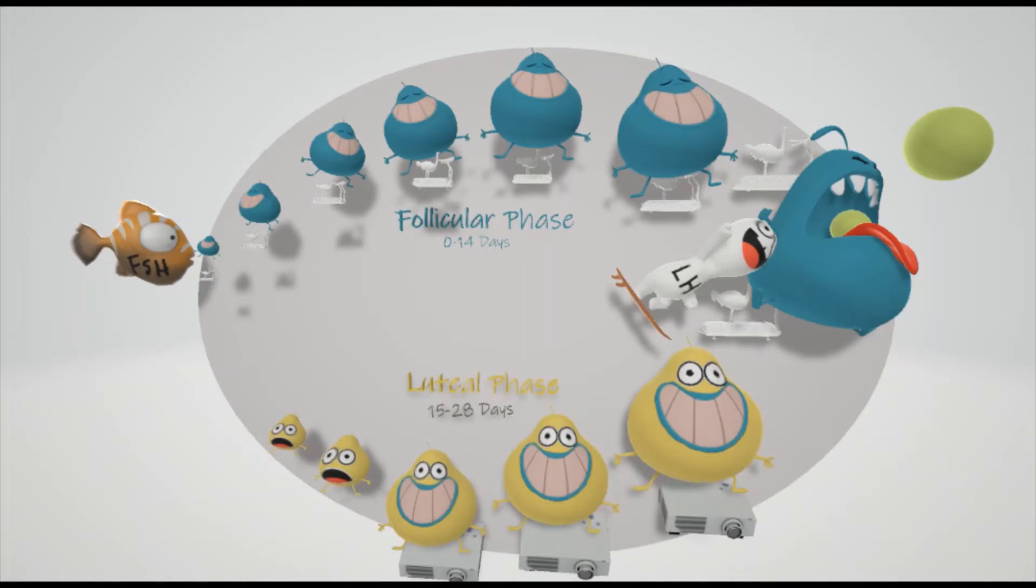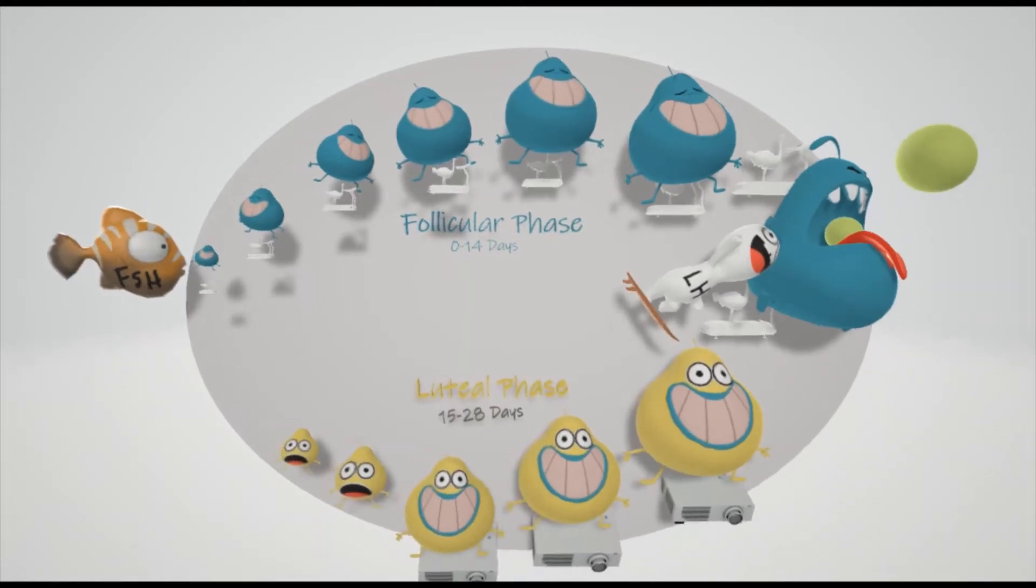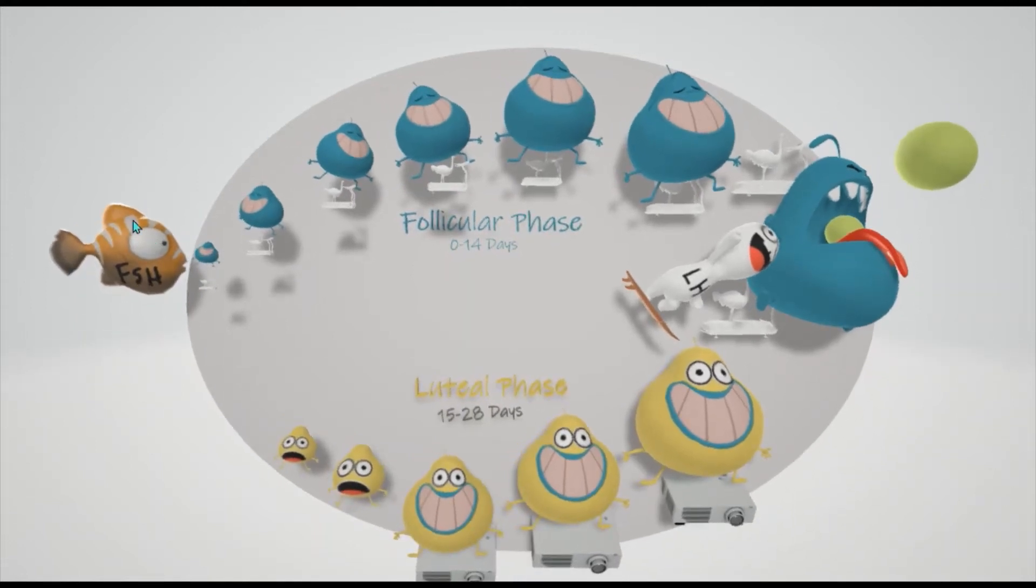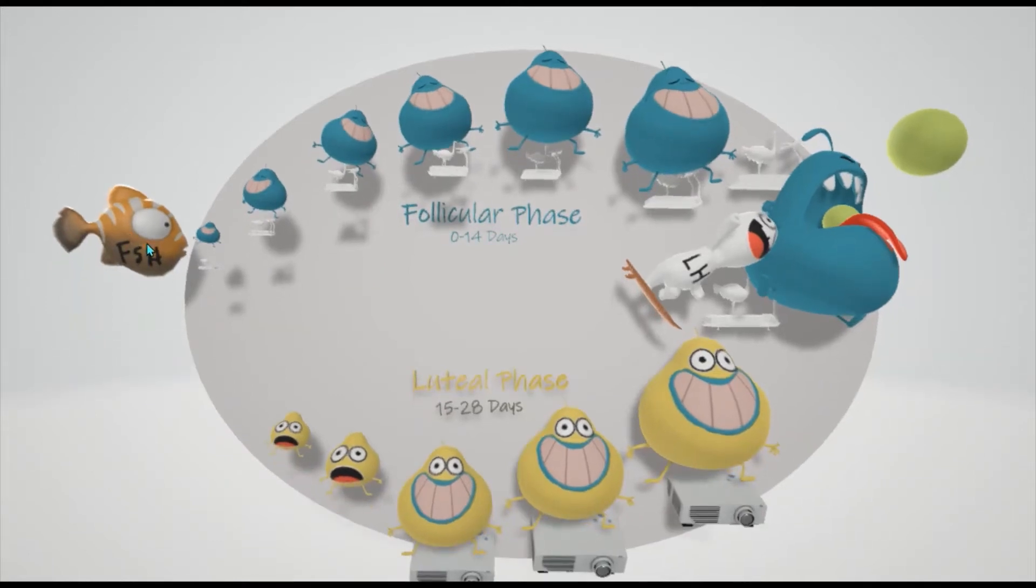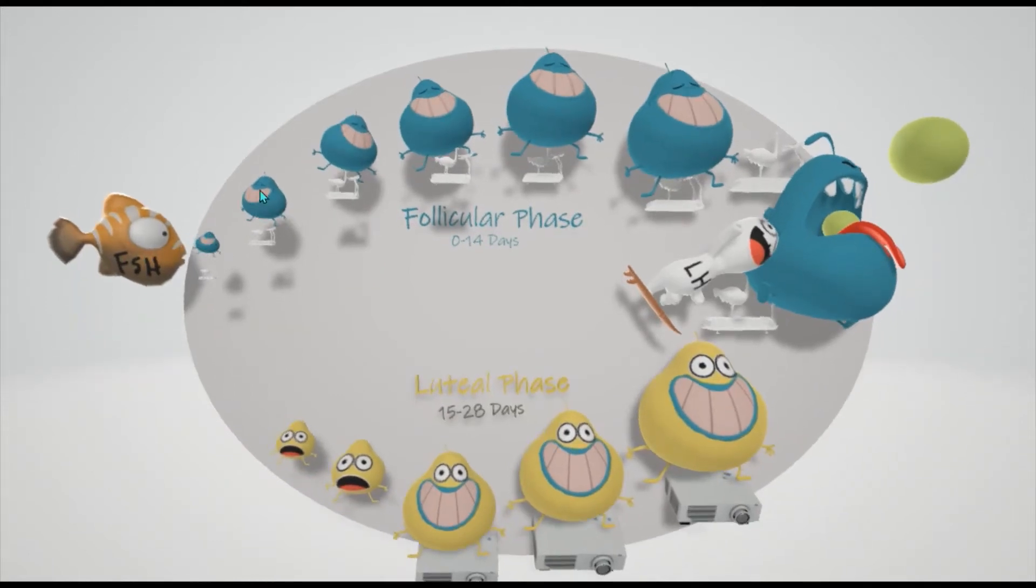Hypothalamus releases GnRH, and that stimulates the anterior pituitary to release FSH and LH. FSH is represented by the fish, and that tells the follicle to grow. We see the follicle here growing because the FSH is telling the follicle to grow. That's the job of FSH.